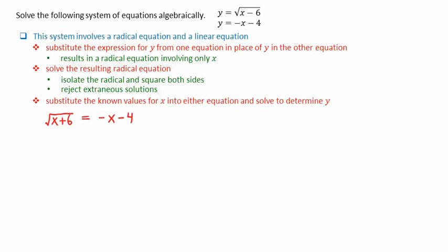To solve this equation, we simply square both sides. This gives x plus 6 as the result from squaring the square root of x plus 6. On the right side, we use FOIL, giving us x squared plus 8x plus 16.